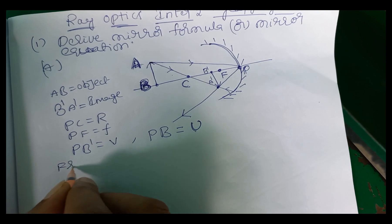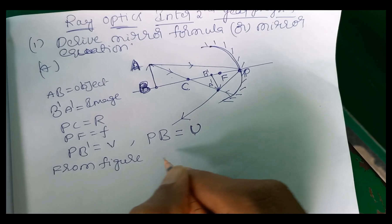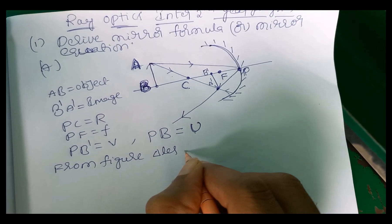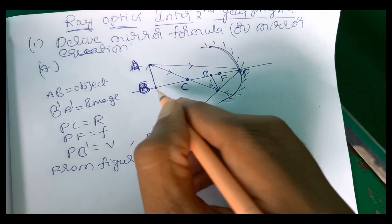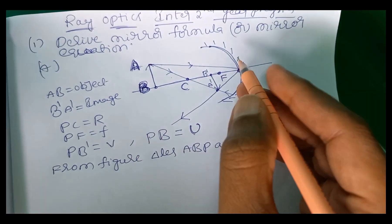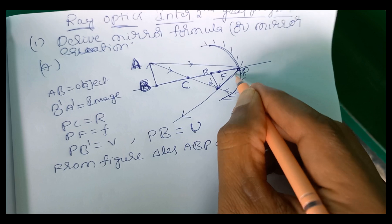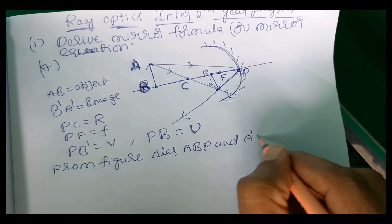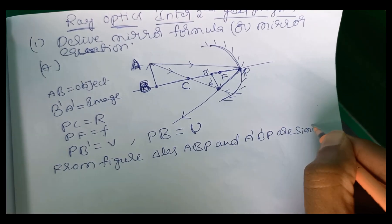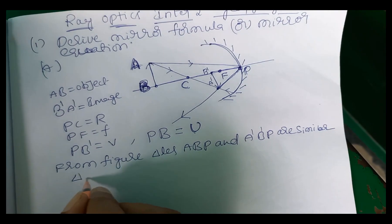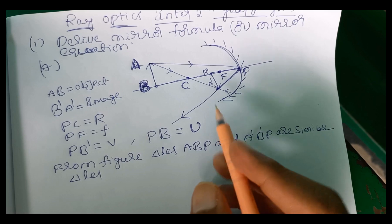So from figure, from figure, triangles A, B, P and A dash B dash. A, B, P and A dash B dash P are similar triangles. Similar triangles say it is a ratio between height and base equal to ratio between height and base.